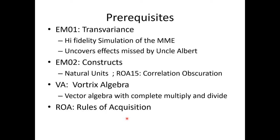So here's the prerequisites. The paper one is transvariance. This is a high fidelity simulation of Michelson-Morley experiment, and it covers effects missed by Uncle Albert. The second paper is constructs. It goes into natural units, the 15th rule of acquisition, the correlation obscuration trap. And then VA is Vortrix algebra. It's a vector algebra with a complete multiply and divide. I got blocked a number of years ago because I could not do things with vector algebra that I needed to do. And I realized it's because there was no divide. And I realized when I started getting into it, the reason why there's no divide is because multiply is not sufficient. Then there's the rules of acquisition. Now let me show you how to get to these items.